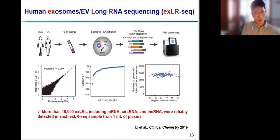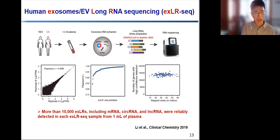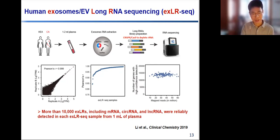Therefore, we further developed an ultimate strategy for ESRI sequencing — exLR-seq — of human plasma. The most critical part of this approach is the long RNA library preparation, in which we amplify all RNA species including ribosomal RNA, and then use CRISPR-Cas9 to deplete ribosomal RNA, and amplify again with PCR to generate the final library. More than 10,000 ESRIs, including messenger RNA, circular RNA, and lncRNA, were reliably detected in each exLR-seq sample from one microliter of plasma.